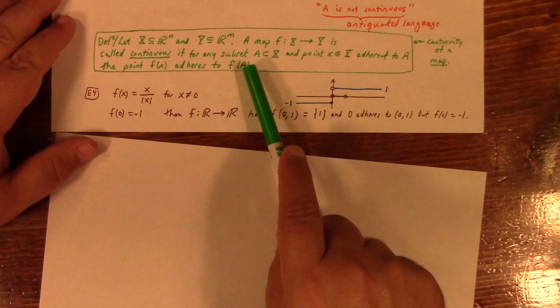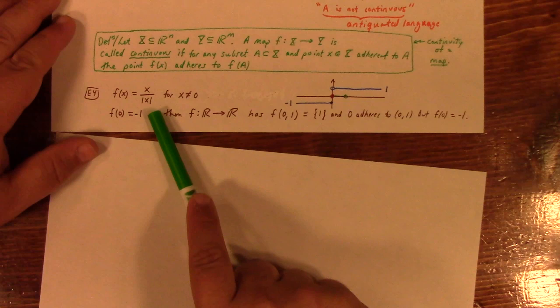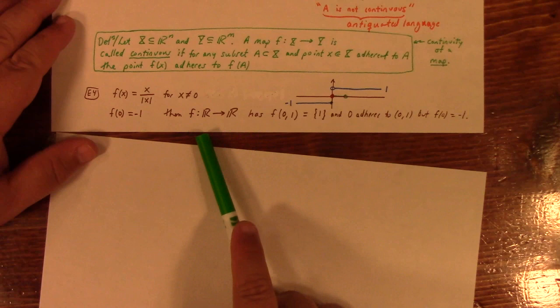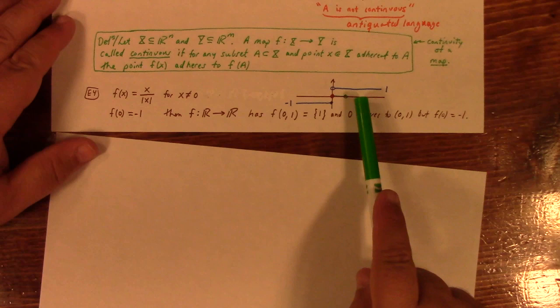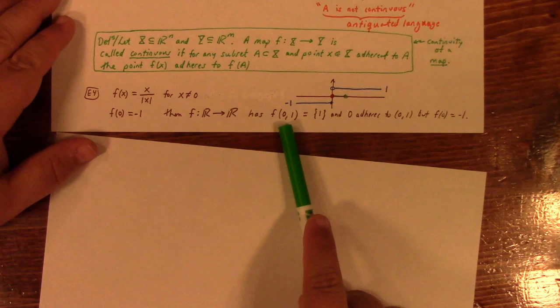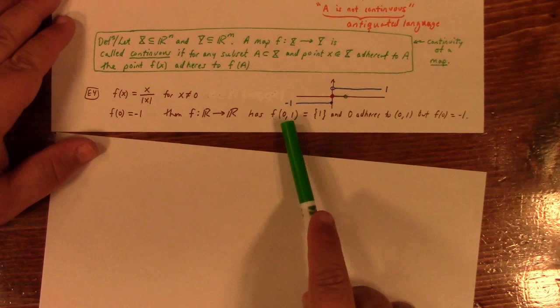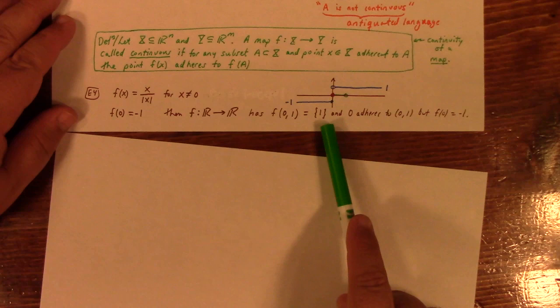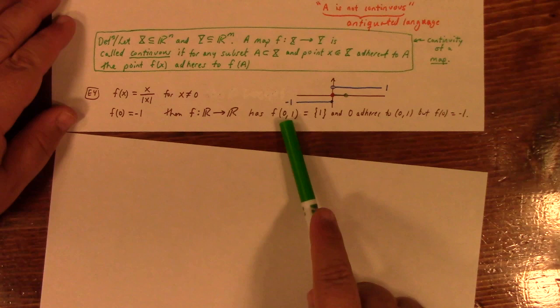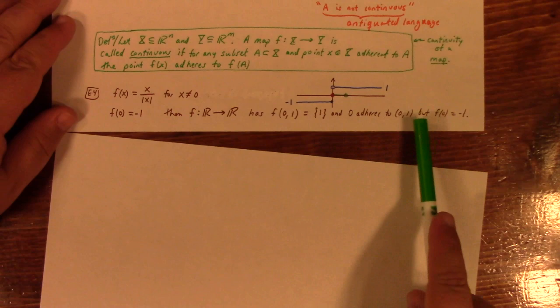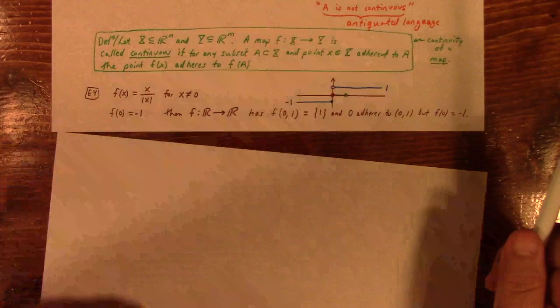Here's an example of a function which is not continuous. Here's the graph of this thing. Basically what's happening is if you look at it, the set 0 to 1 not included is certainly adhering to 0. That point is stuck on the left end of this set 0, 1. The image of 0, 1, if you look at where does F of 0, 1 go, well, it goes to 1. And so, because 0 is not included, 0 maps to minus 1. So F of 0 maps to minus 1, but F of 0, 1 maps to 1. So 1 does not adhere to minus 1. They're separated.